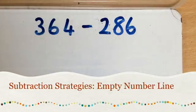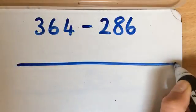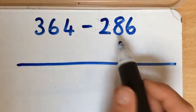Another strategy for subtraction would be to use a blank number line. There are two different ways that this can be used. The first one would be to start with the big number, take away the smaller number.